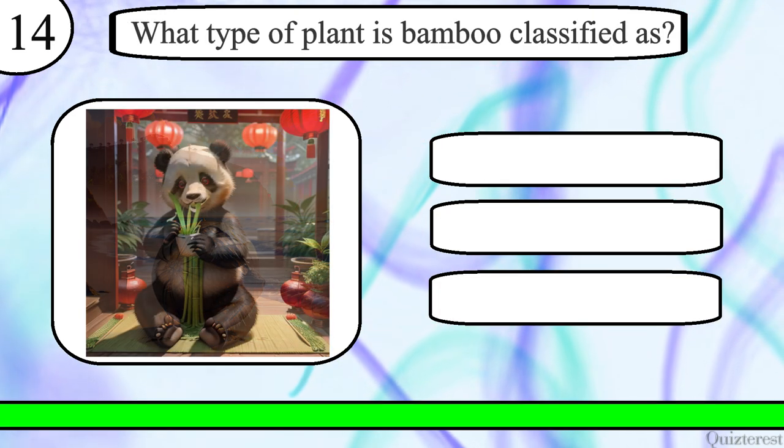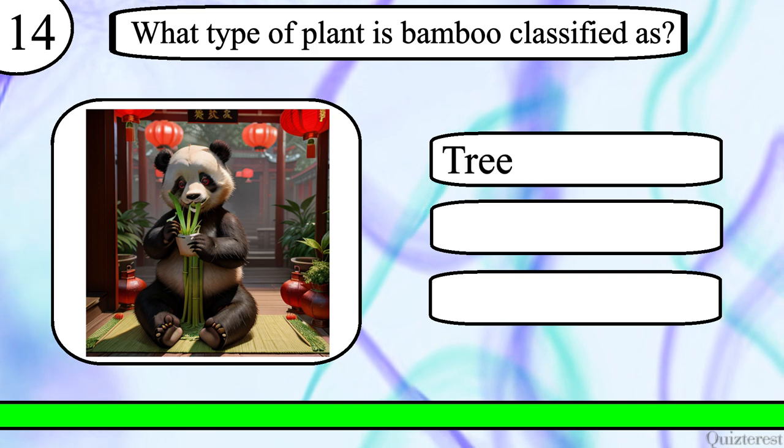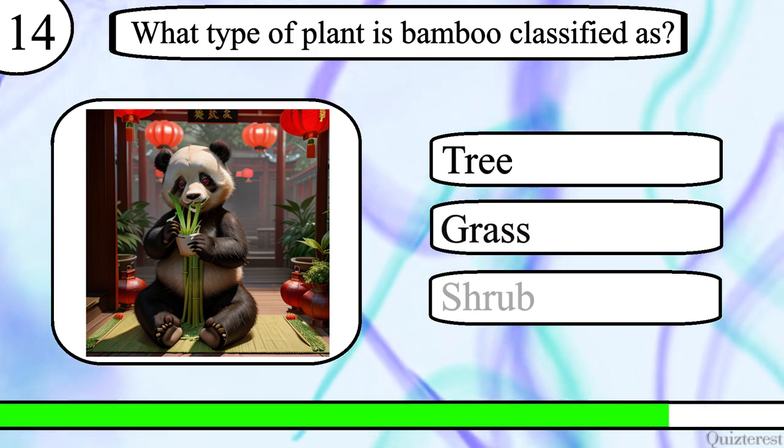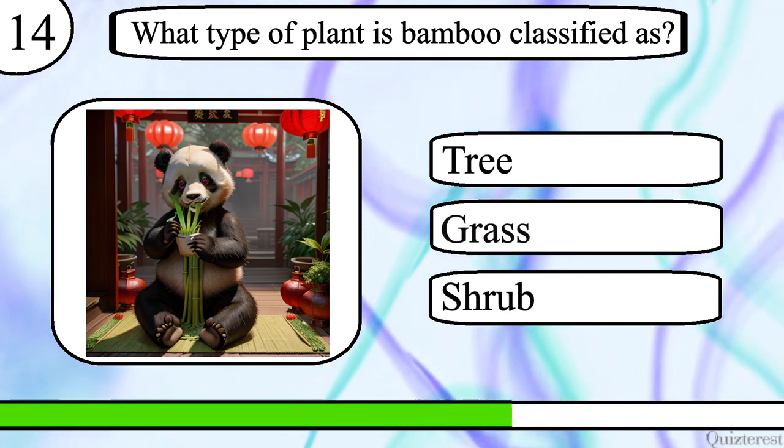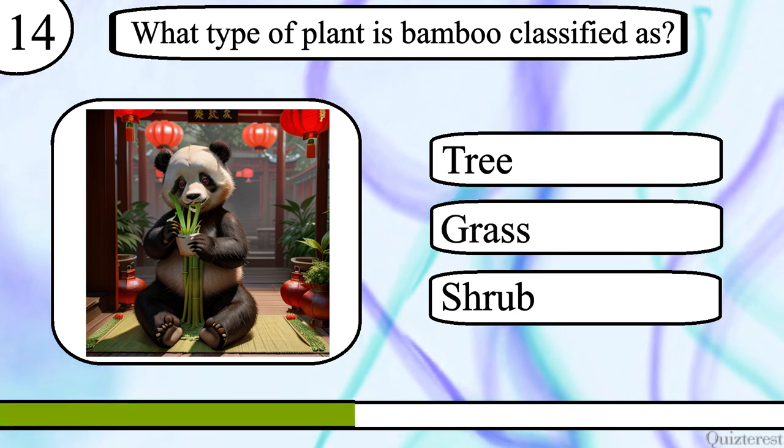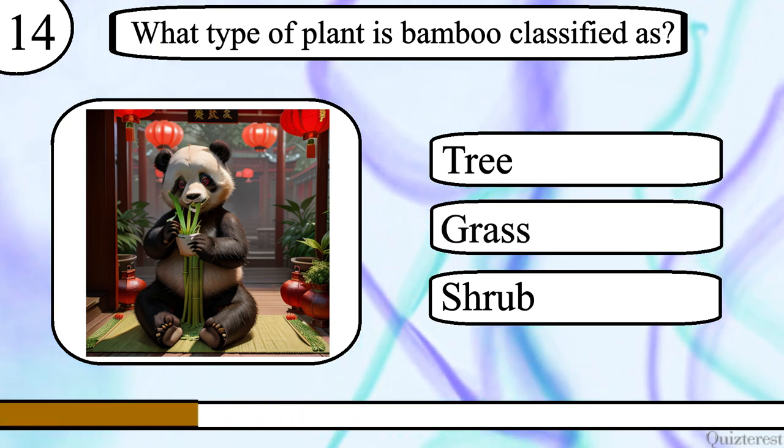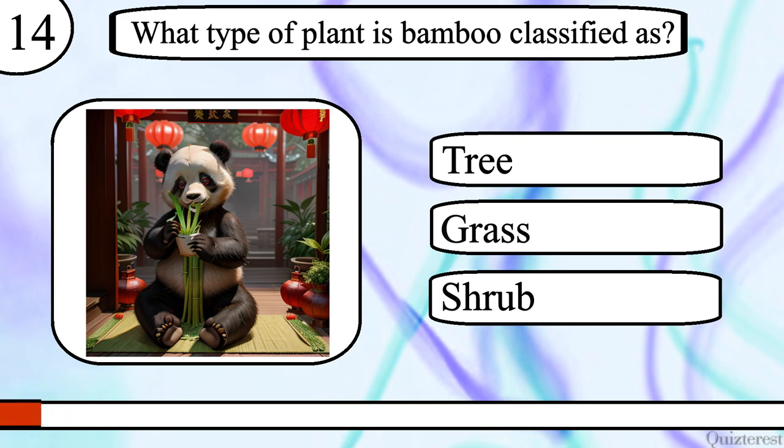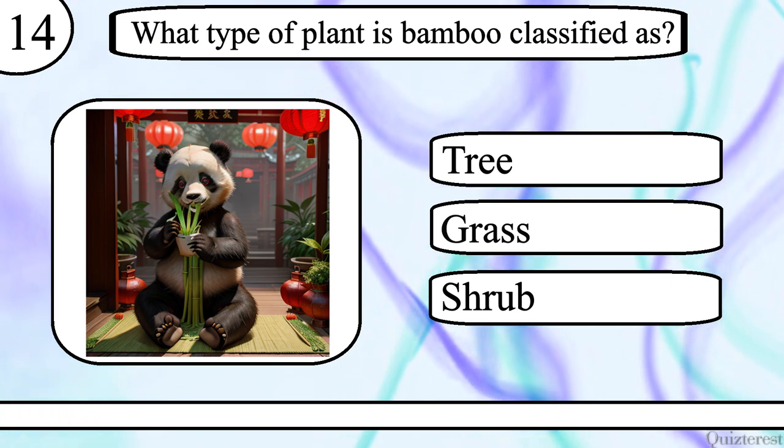Question 14. What type of plant is bamboo classified as? Tree, grass or shrub? The correct answer is grass.